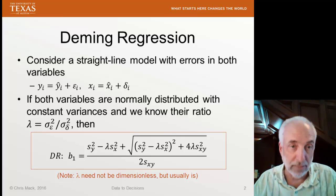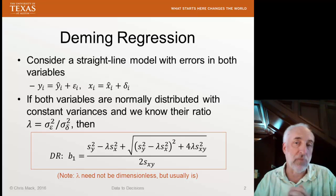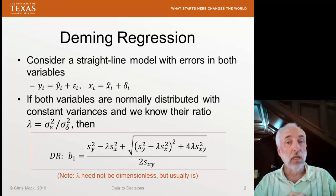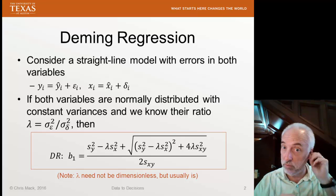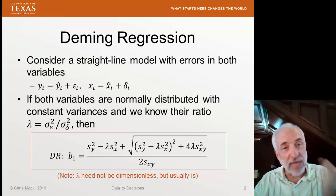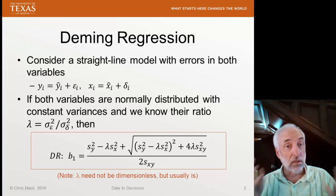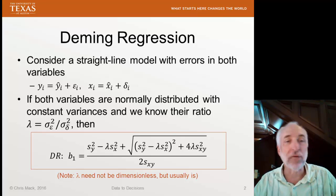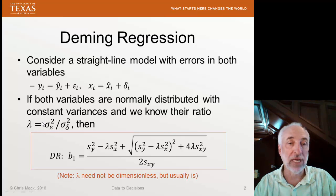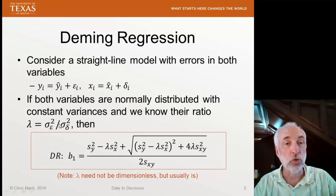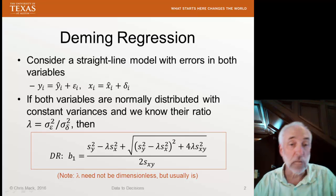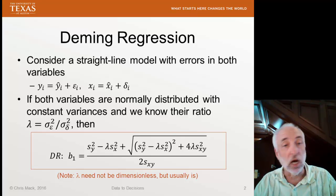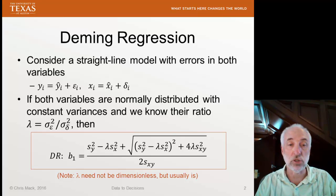Deming regression is named after statistician and quality guru Edward Deming. Consider a straight line model where we have measurements in x and measurements in y, and both include errors. Assuming those variables are normally distributed and that the variance of the x measurements and the y measurements are both constant, the ratio of variances will be constant. If we know that ratio — we call it lambda — we can do a maximum likelihood estimation of the slope, arriving at the equation shown.